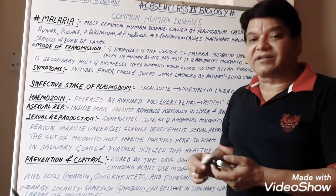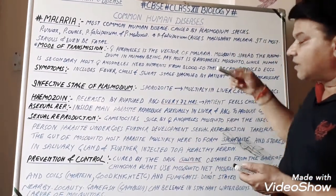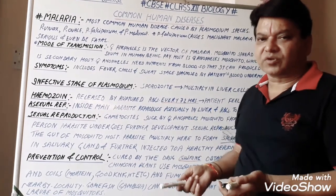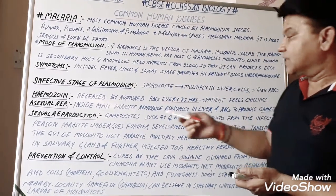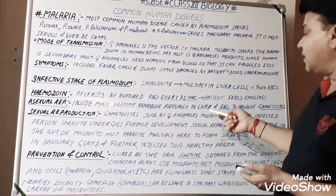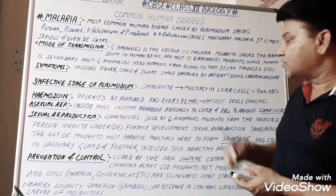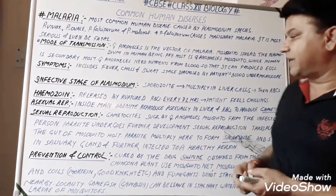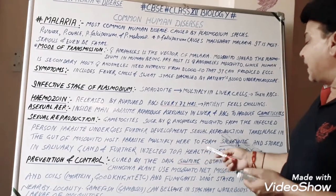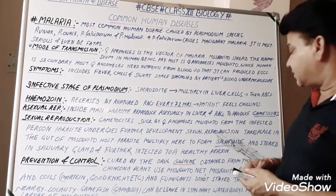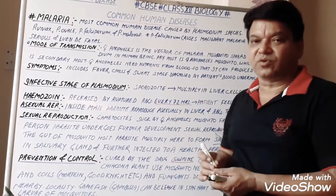Sexual reproduction takes place inside the gut of the female Anopheles mosquito. The gametocytes sucked from the infected person undergo further development, and sexual reproduction takes place in the gut of the mosquito. The parasite multiplies here to form sporozoites, which are then stored inside the salivary gland of the mosquito.